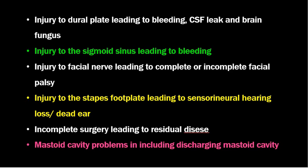Brain fungus used to happen in the past when a chisel was used during mastoid surgery. Next is injury to the sigmoid sinus, again leading to bleeding. Injury to the dural plate and the sigmoid sinus occurs when there is a small mastoid antrum — a so-called contracted antrum. More complications occur when there is a contracted mastoid antrum.